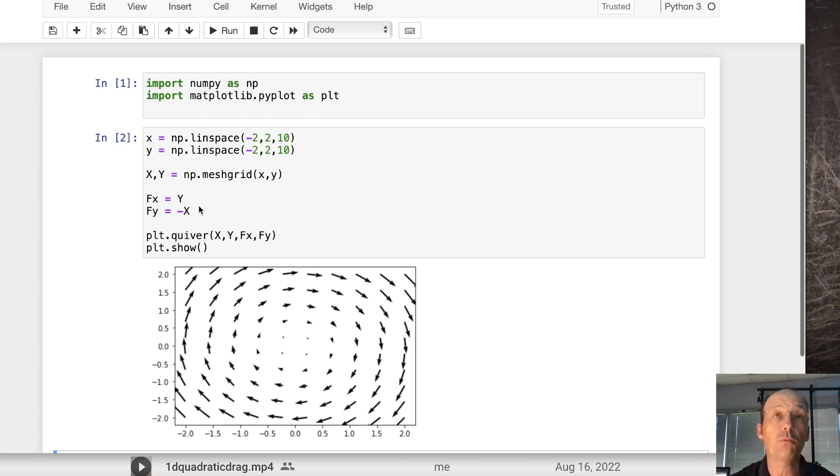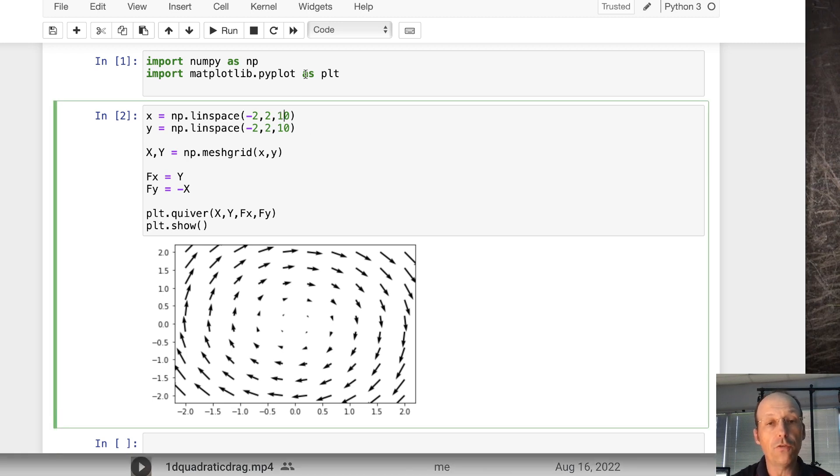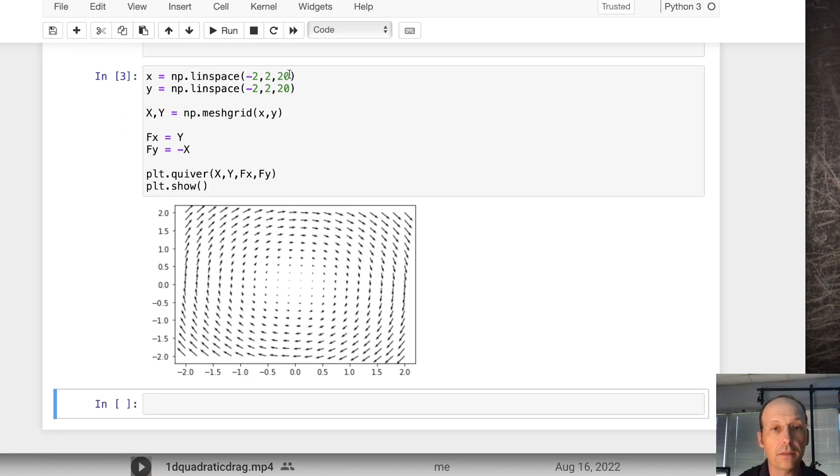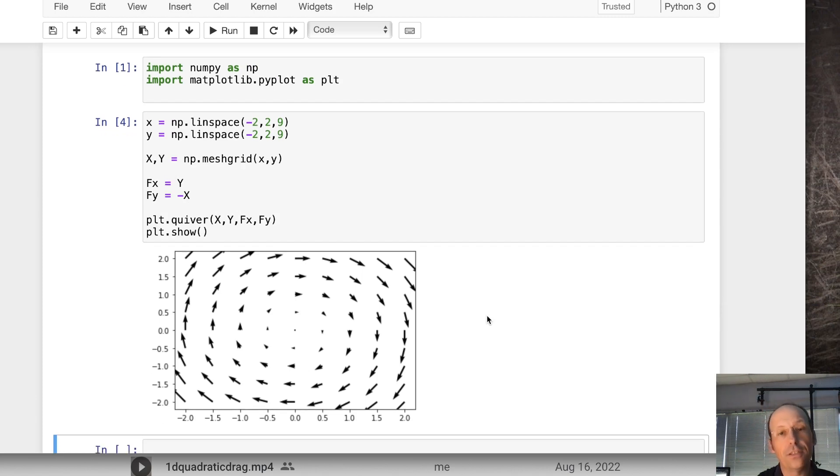np.meshgrid takes those two sets of x and y values and makes a grid out of them. Now the beauty of this is I can define my x and y component of my function by just saying the x component's y, and it's going to do all the fx's for all the points, and fy is negative x for all the points. Then plot. I need the x coordinate, the y coordinate, the x component of the vector, the y component of the vector. We're going to be going from right here down to right here, and the direction and magnitude of that force changes.